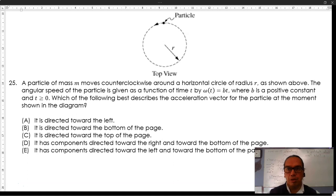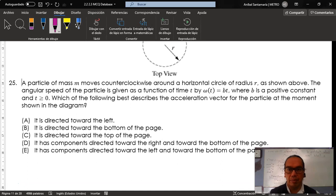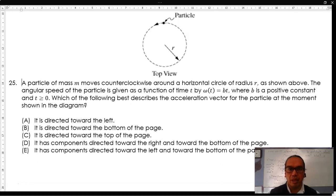Now, in this particular case, given that omega is not constant, but depends on time, it is clear that there must be a tangential acceleration like this, because the speed is increasing with time.